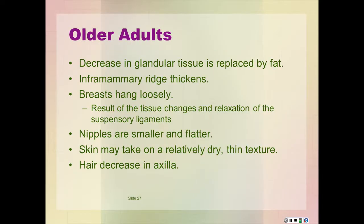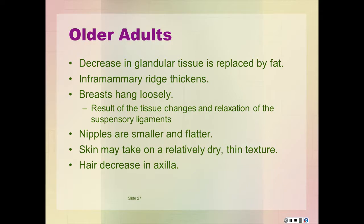After menopause, glandular tissues atrophy gradually and are replaced by fat. The inframammary ridge at the lower edge of the breast thickens. The breasts tend to hang more loosely from the chest as a result of the tissue changes and the relaxation of the suspensory ligaments. The nipples become smaller and flatter and may lose some erectile ability. The skin may take on a relatively dry, thin texture, and loss of axillary hair may also occur.